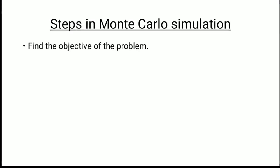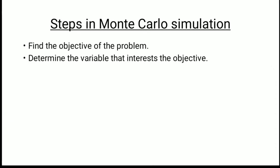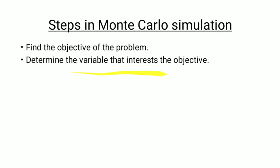Now let us see the steps involved in Monte Carlo simulation. The first step is to find the objective of the problem — whether we want to maximize or minimize. The next step is to determine the variable that affects the objective, meaning we identify the variable which influences the maximization or minimization value.